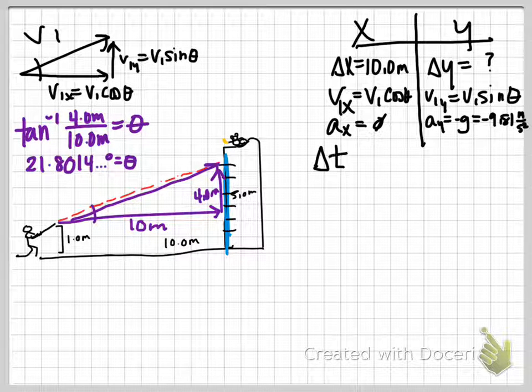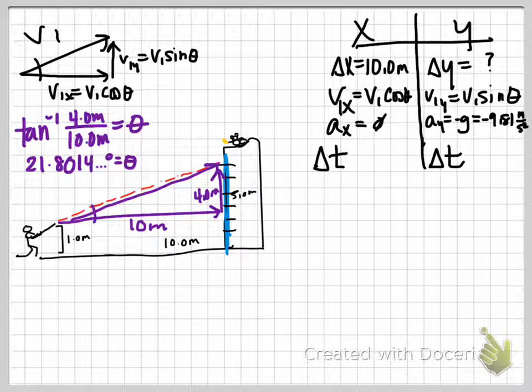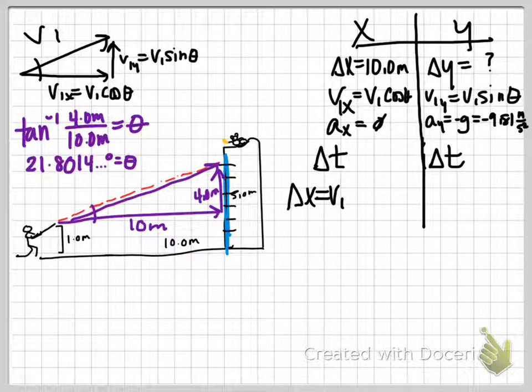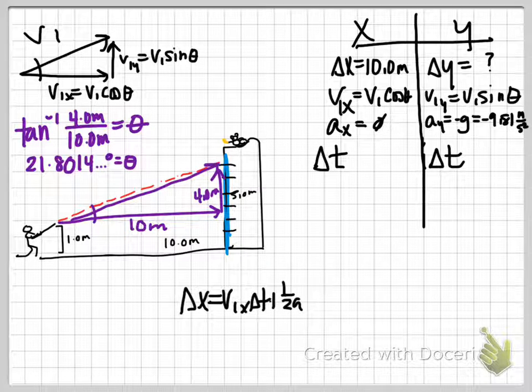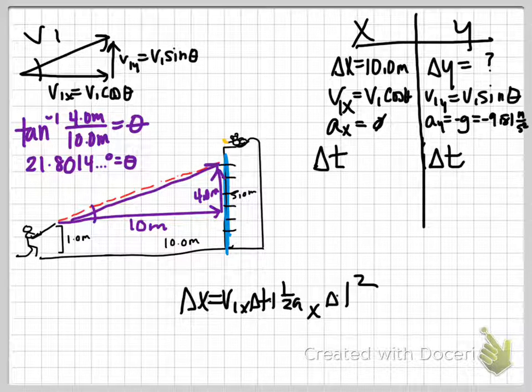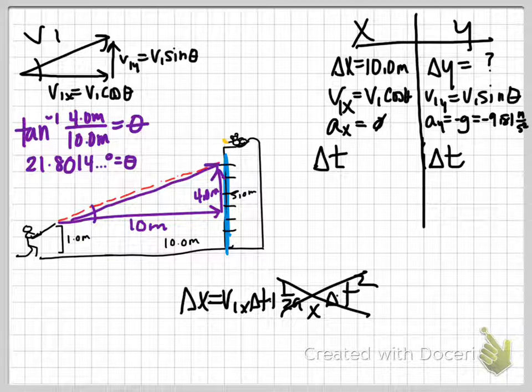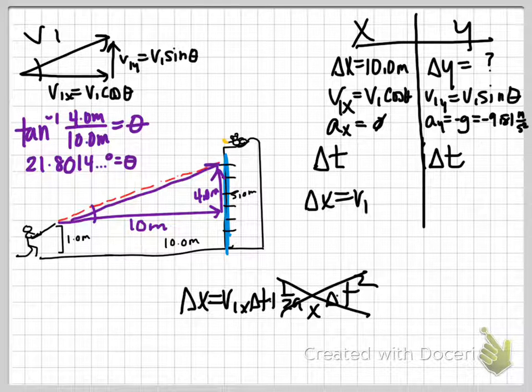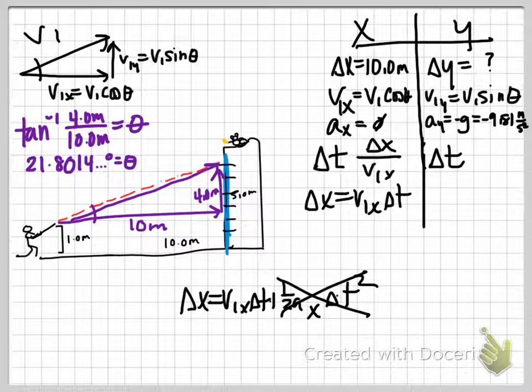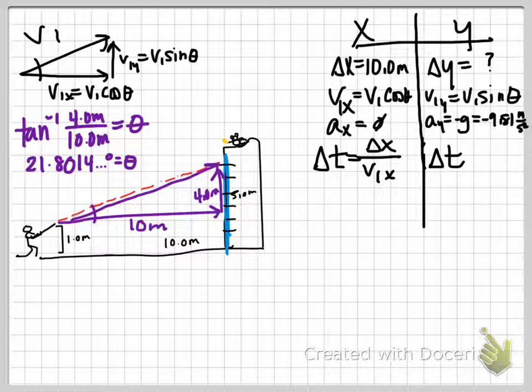What do we typically use as the bridge between our axes? Delta T. It's really convenient because T is moving the same way on the X and the Y axis. If we go back to our old standby, delta X equals VI X delta T plus 1 half A sub X delta T squared, we still get rid of this half of the equation because we still have no acceleration on the X axis. So that gives us delta X equals VI X delta T, or delta T equals delta X over VI X.